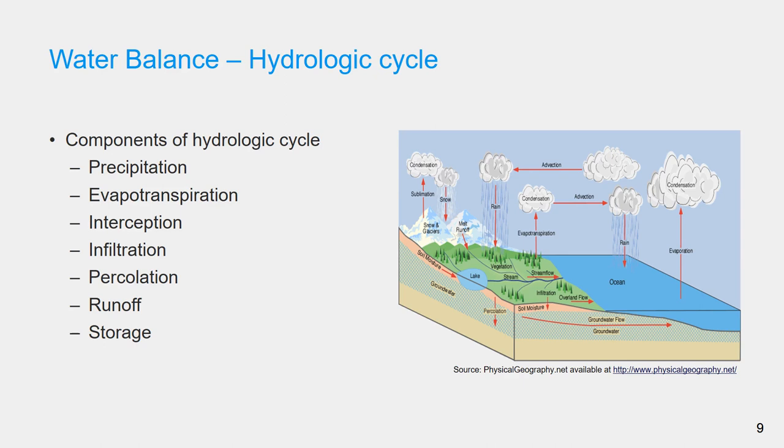And the atmosphere includes all the air above the surface of the earth on the way to space. And the lithosphere includes the earth's crust and the upper part of the mantle.